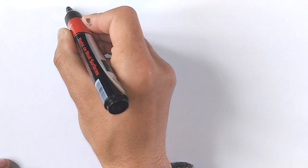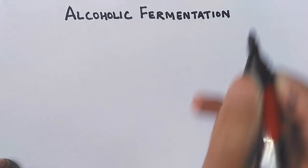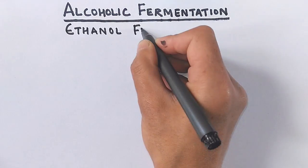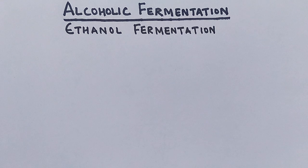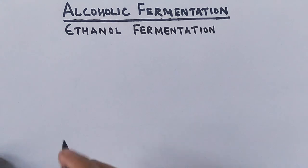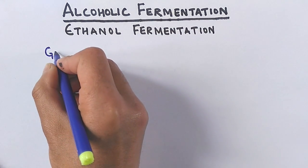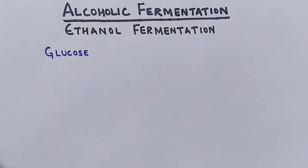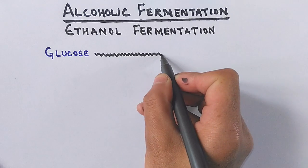Having already studied the overview of fermentation and lactic acid fermentation in detail, we will now discuss alcoholic fermentation, also called ethanol fermentation, because the final product formed in this process is ethanol. In ethanol or alcoholic fermentation, the glucose molecule acts as the substrate and the final product is ethanol.